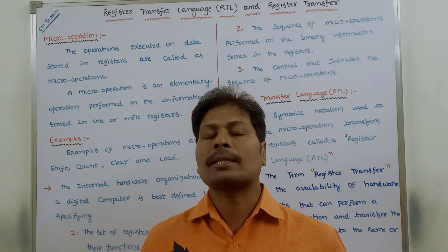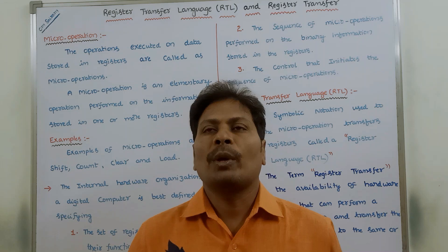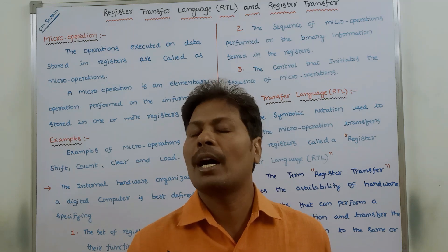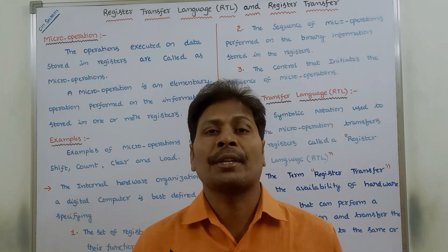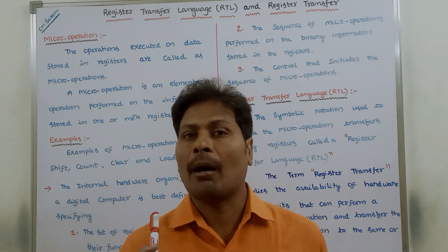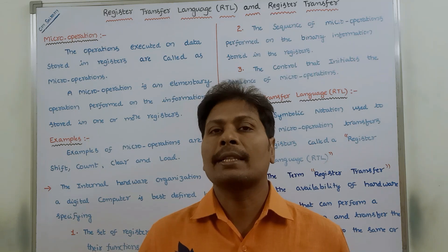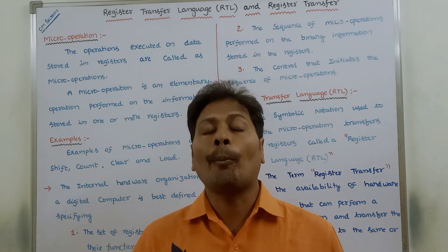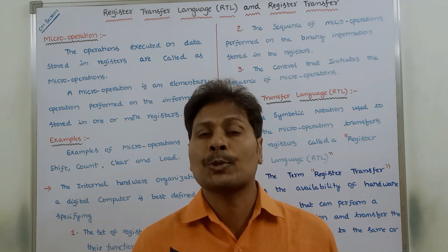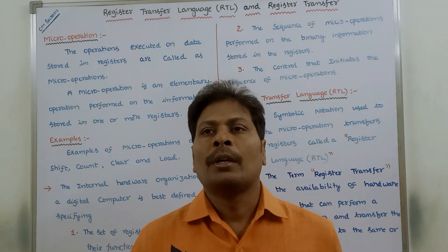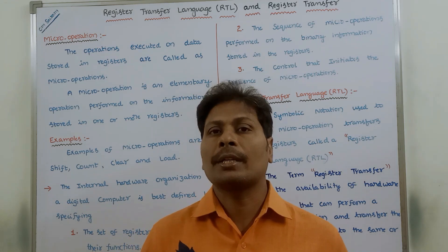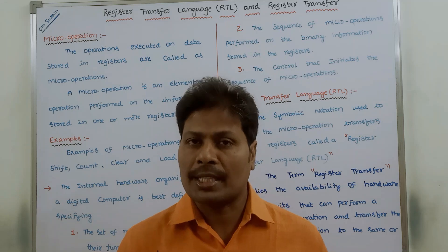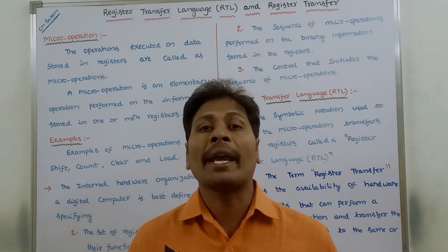First of all, what is micro operation? Suppose we are taking any operation such as addition, subtraction, multiplication, and division. To perform that operation, we require operand data. Those operands are stored either in registers or in memory. Instead of storing the operand data in memory, they can also be stored in registers. Now, we have to perform the operation on the data that is stored in registers, and then that can be called a micro operation.